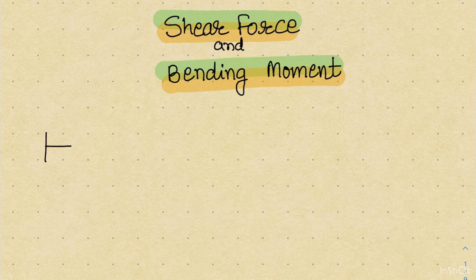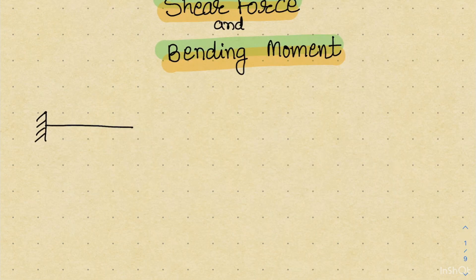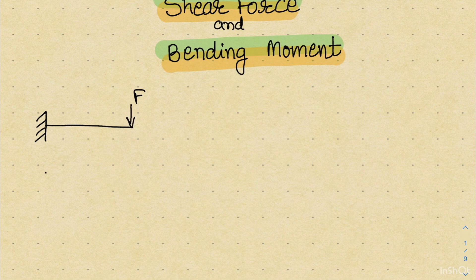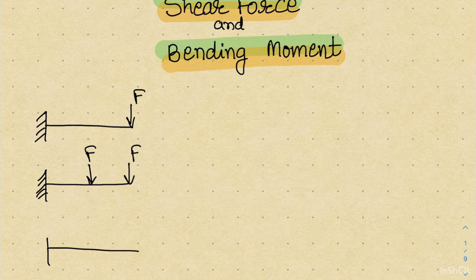For example, if I am having a cantilever beam and a point load is acting on it, what will be the shape of the shear force diagram and the bending moment diagram? We will start with a cantilever beam with a single point load, then slowly build our concept by adding more loads, and then add a uniformly distributed load to learn how to make the shear force and bending moment diagram.